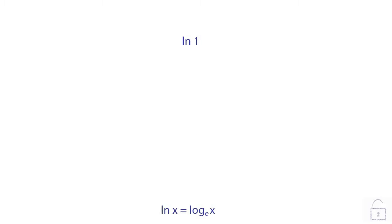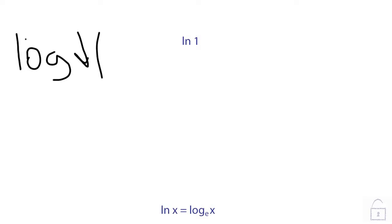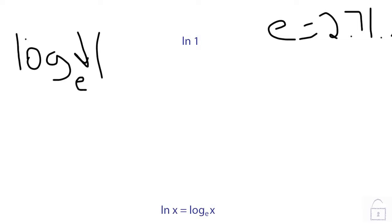So what a natural log means is it's just like a normal log, but it just has a special base. We can rewrite this as the log of 1, but we'll have to have our base right here. Our base for every natural log is e. Now e is equal to about 2.71 and then it's a bunch of other numbers, so it's just a constant. We can put our letter e right there and then the natural log of 1.